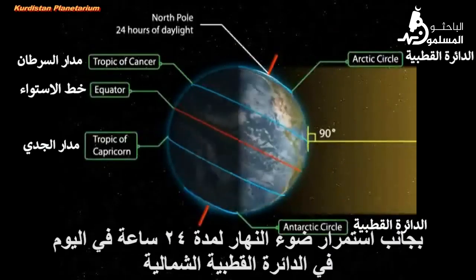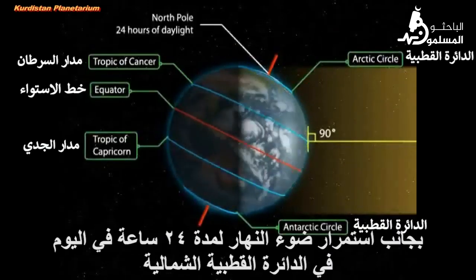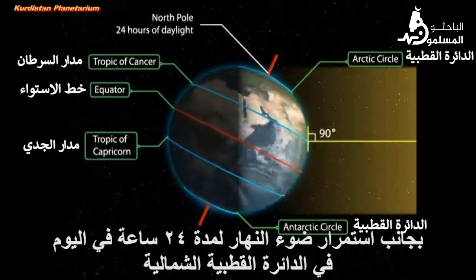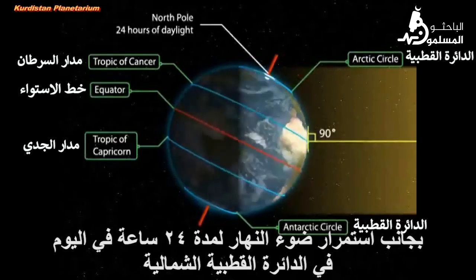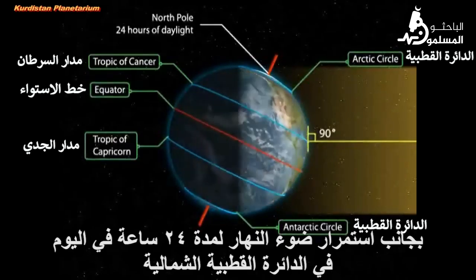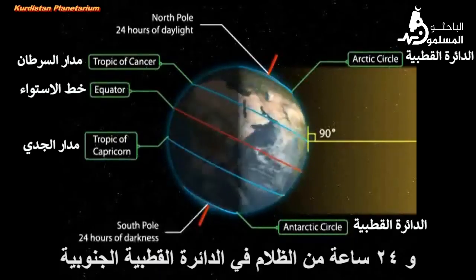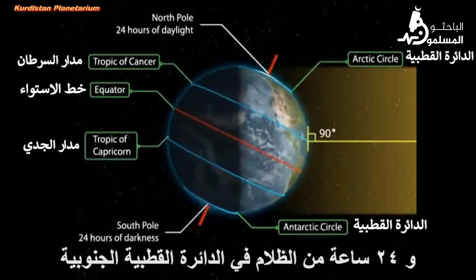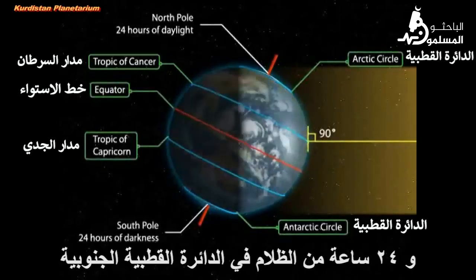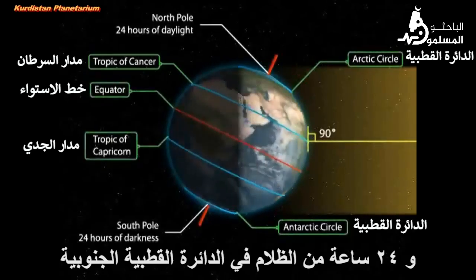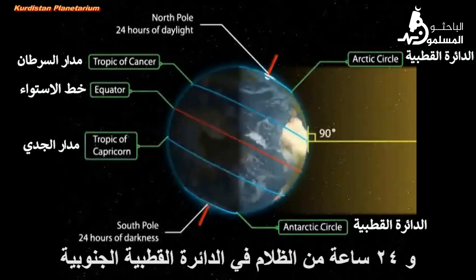Besides, there are 24 hours of daylight at the Arctic Circle, and 24 hours of darkness at the Antarctic Circle.